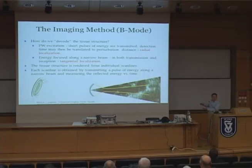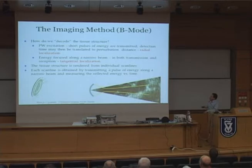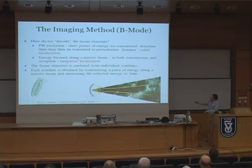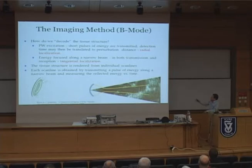We additionally need to obtain tangential or angular localization, and this is done by focusing the energy along a narrow beam both in transmission and in reception. Basically, the tissue structure is rendered from individual scanlines where each time we transmit a single pulse of energy, we detect the reflected energy and map it versus time, and then this beam is steered in the plane or in the volume.